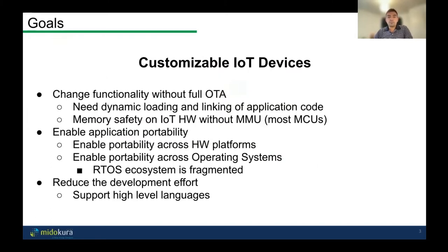One of our goals is to build customizable IoT devices. That means we need to change functionality without doing full OTA — over-the-air update — which involves replacing the entire firmware. It also means dynamic loading and linking of application code, which traditionally in embedded systems hasn't been available. And we need memory safety and control flow safety on IoT hardware that doesn't have MMUs, which is basically most 32-bit MCUs.